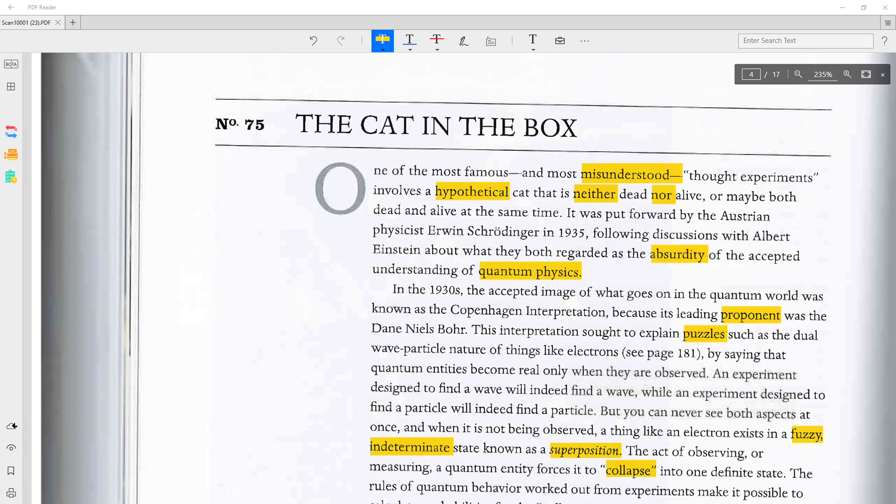The cat in the box. One of the most famous and most misunderstood thought experiments involves a hypothetical cat that is neither dead nor alive, or maybe both dead and alive at the same time. It was put forward by the Austrian physicist Erwin Schrödinger in 1935, following discussions with Albert Einstein about what they both regarded as the absurdity of the accepted understanding of quantum physics.